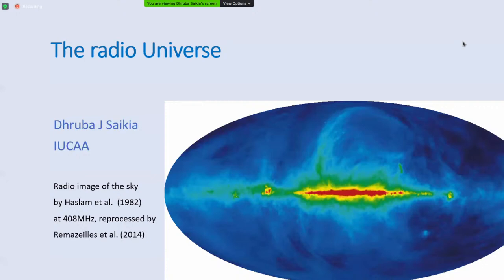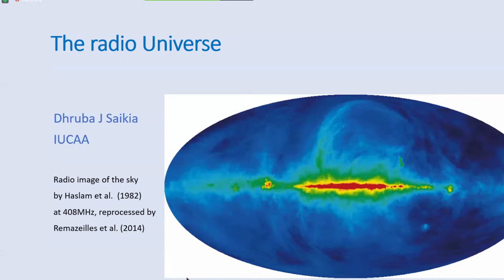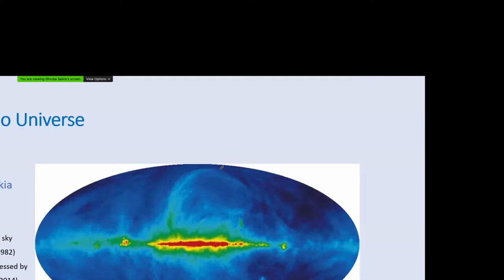This was done by Glenn Haslam and his collaborators using telescopes in England - the Jodrell Bank Telescope, now known as the Lovell Telescope, the Bonn Telescope, and the Parkes telescope. This particular image had an angular resolution of about 0.85 degrees and was made at a frequency of 408 megahertz. This is a false color image because at radio wavelengths you can't really make out color; color is a perception related to our eye.